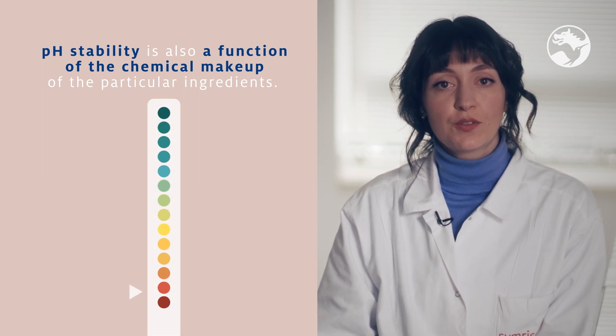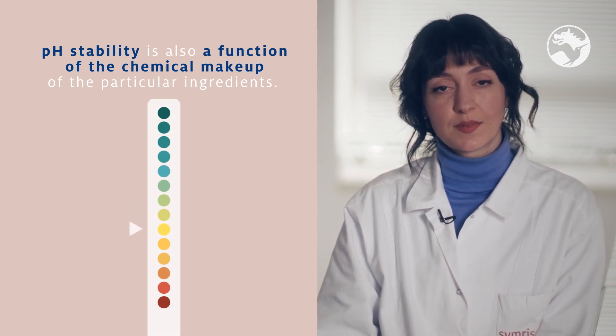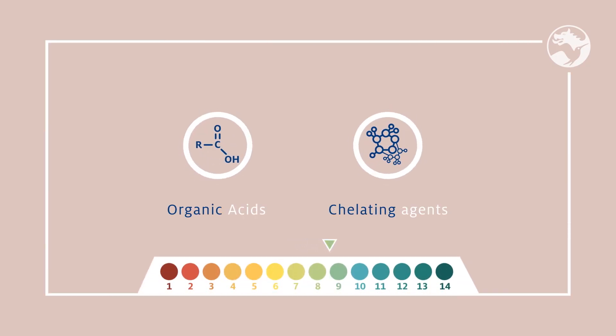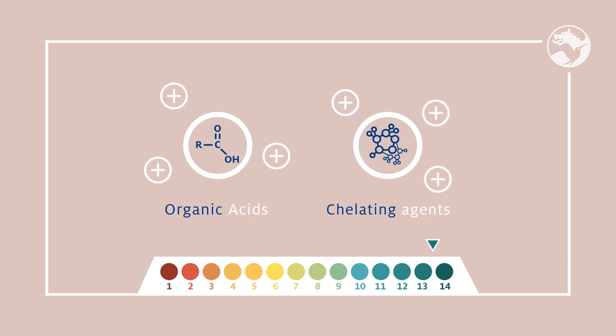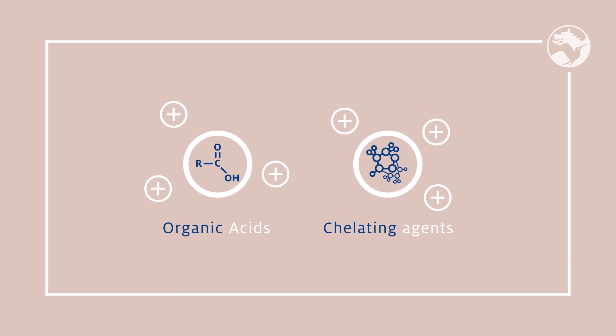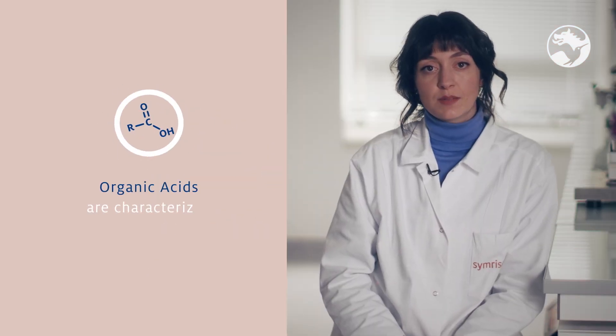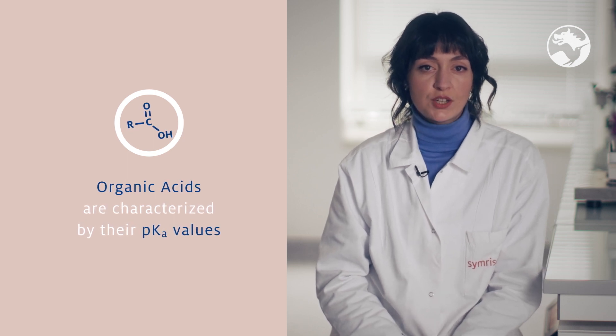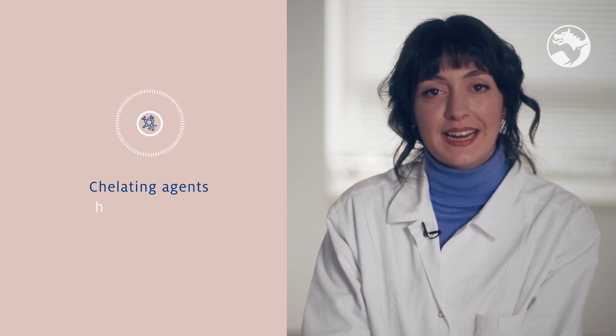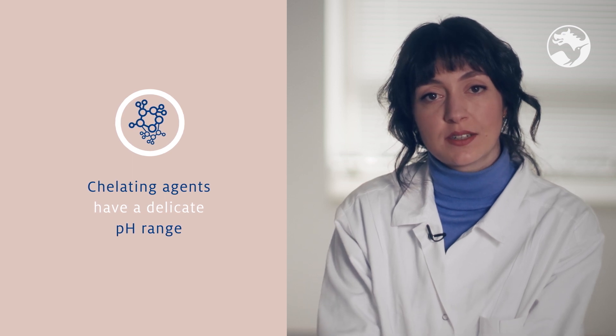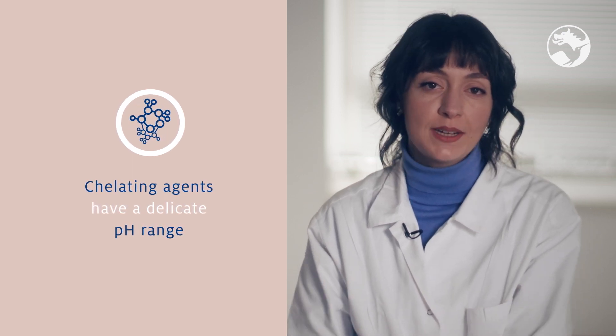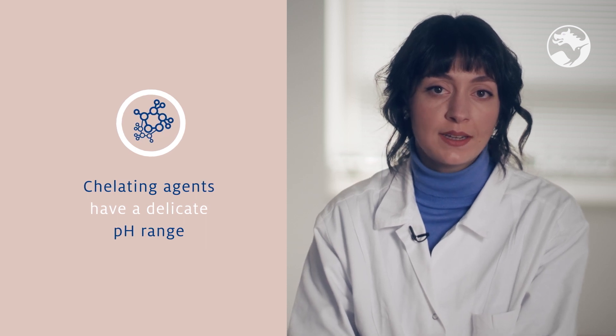pH stability is also a function of the chemical makeup of the particular ingredients. Product protection ingredients bearing carboxylic groups, such as organic acids or chelating agents, undergo proton dissociation above a certain pH value, which is detrimental to their antimicrobial efficacy. Organic acids are characterized by their pKa value, which is related to their proton dissociation constants, and show quickly diminishing activity at pH values above their pKa. Chelating agents have an even more delicate pH range, since the acidity or alkalinity of the environment may dramatically influence their metal ion binding capacity and stability — these being the primary mechanism responsible for antimicrobial activity.